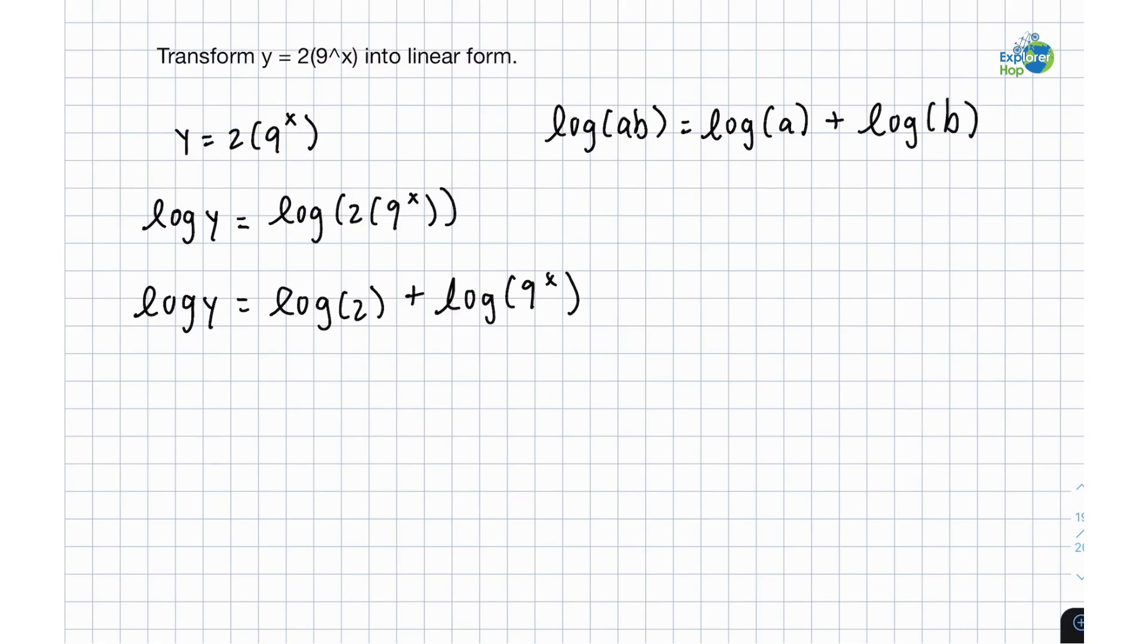This is the product rule for logarithms. So now we can rearrange our equation and we get log 9 to the x, which because of the power rule for logarithms is the same as x times log 9 plus log 2.